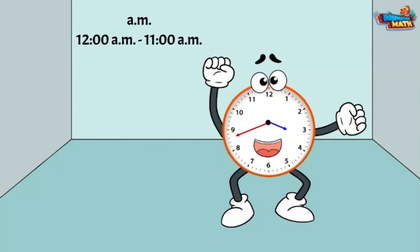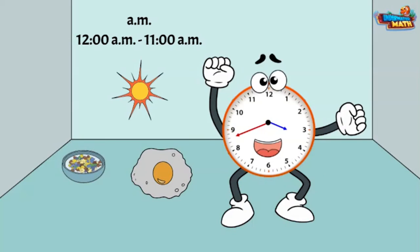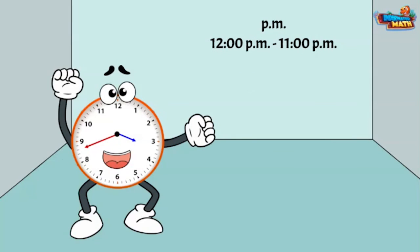Last thing before I go: the label AM represents a time between 12 o'clock AM and 11 o'clock AM. This is when we wake up, eat breakfast, and some of the time the sun is up.